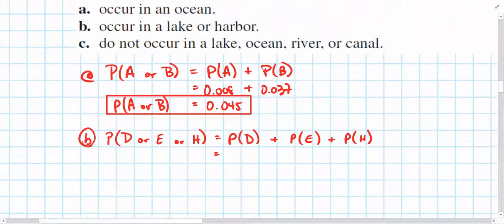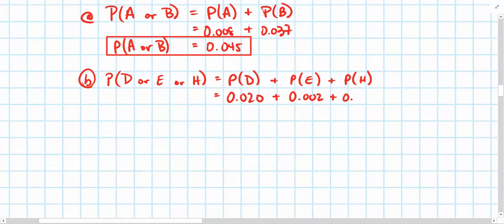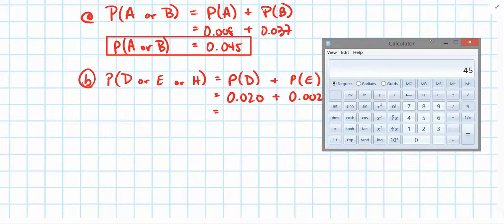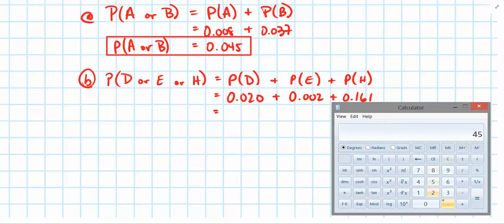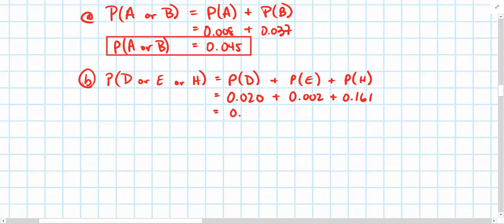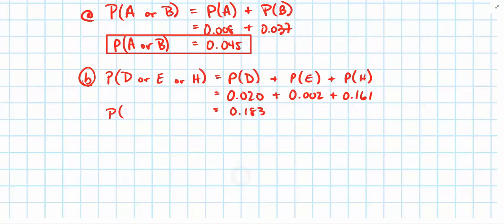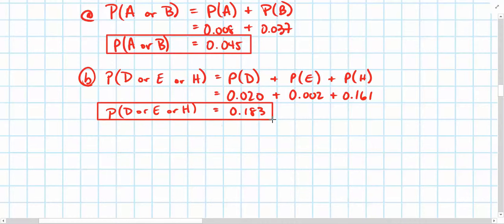So, for D, we have 0.020. For E, we have 0.002. And for H, we have 0.161. So, these three summed together, 0.020 plus 0.002 plus 0.161 equals 0.183. So, the probability that a spill occurs in a lake or a harbor is equal to 0.183, or approximately an 18.3% chance.